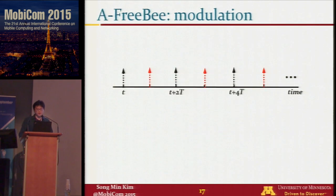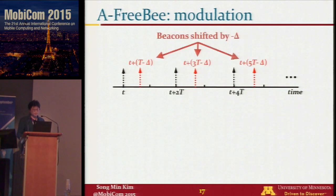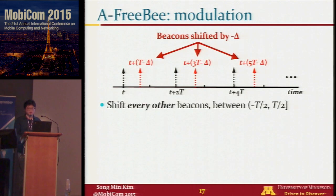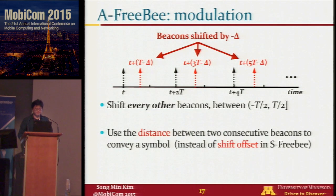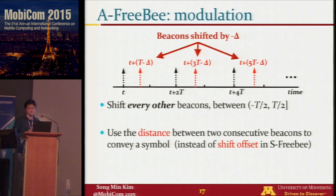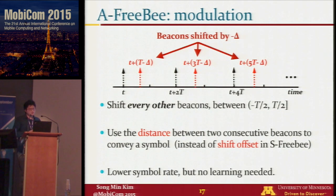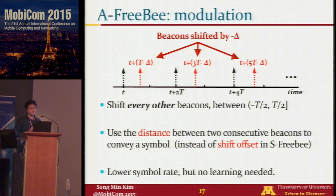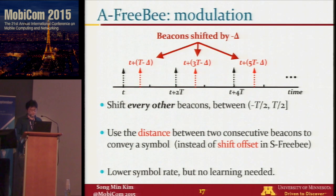Therefore, we introduce A-FreeBee, where we shift every other beacon instead, and use the distance between two consecutive beacons to convey a symbol. This offers a lower symbol rate compared to S-FreeBee, but time synchronization and learning are no longer required.